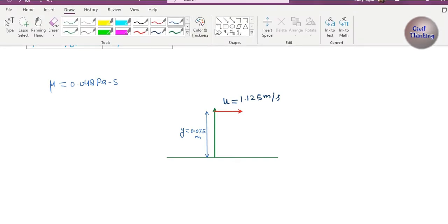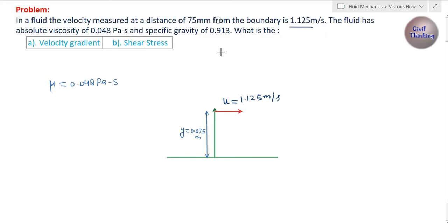To find the velocity gradient, let's assume the velocity profile to be linear. We are assuming a linear velocity profile. This is a straight line with slope. If we had something like a curve, this was not linear.